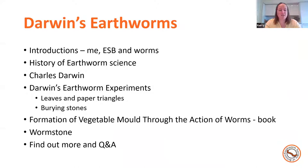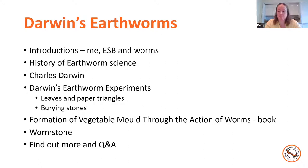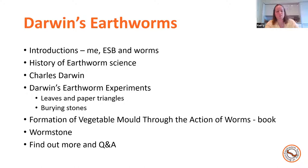I'm going to go through a few introductions, tell you a little bit about me and how I got into earthworms, the Earthworm Society of Britain, and then what earthworms are. I'll then go through the history of earthworm science and what was known about earthworms pre-Darwin. A little bit about Charles Darwin himself and some of the experiments that he did — looking at leaves, paper triangles, and how worms pull those into their burrows, as well as experiments looking at how they bury stones. He published a book about earthworms, and I'll talk about Darwin's worm stone, which you can see a replica of at Down House. We'll finish up with some questions and hopefully some answers.